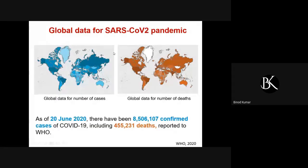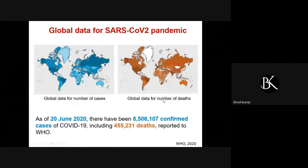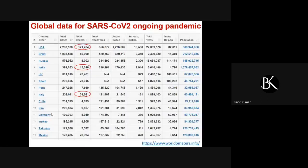Looking at the global data for the SARS coronavirus 2 pandemic, the left picture shows global case numbers while the right shows global deaths. The whole map is colored and as of June 20, 2020, there have been around 8 million confirmed cases of COVID-19, including around 0.5 million deaths reported to the WHO — a huge figure compared to any other virus outbreak to date.